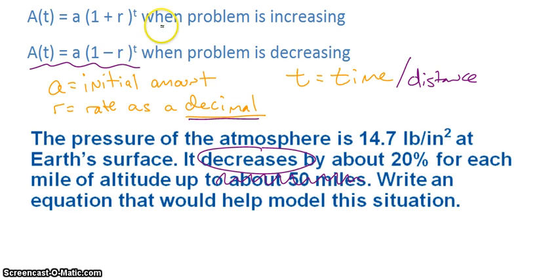So, I know I'm going to be using that 1 minus r to the t function. And so, I start writing it A(t) equals my initial amount, 14.7, times 1 minus I need to write my rate as a decimal. So, remember, just move over your decimal point twice, 0.2, to the t, which in this case is going to be talking about distance above the Earth's surface. But t suffices.